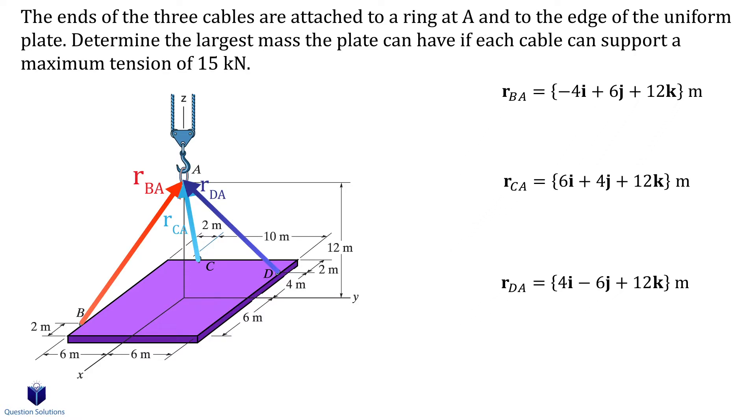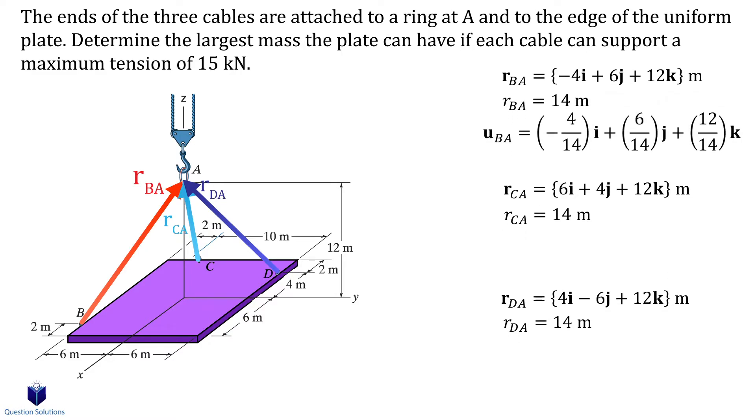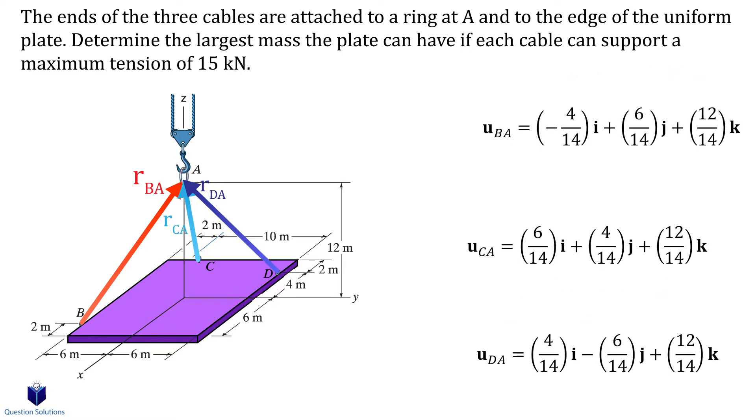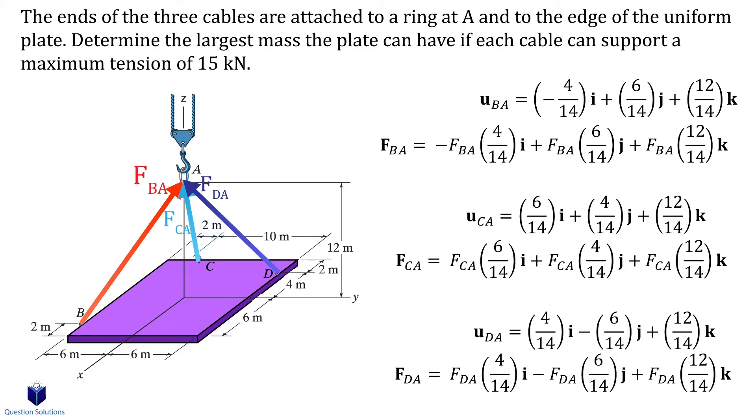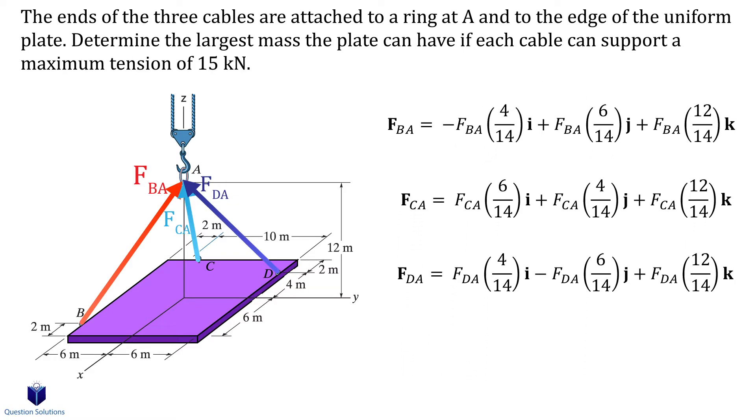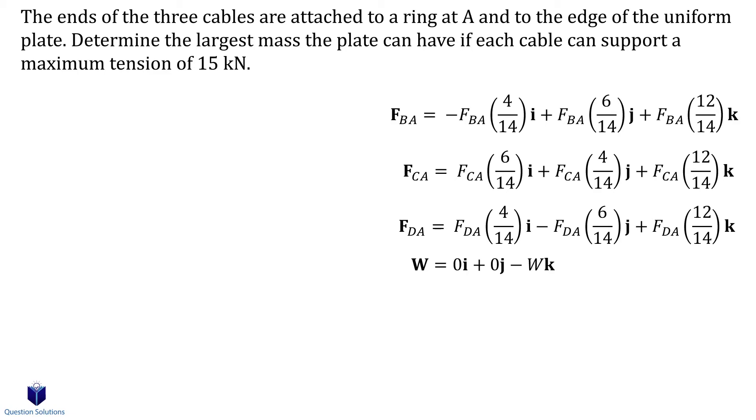Next is the unit vectors. Now to express each force all we need to do is multiply the magnitude of the force by the unit vector. Don't forget we also have the weight of the plate which will be straight down. Now we're going to equal each component to zero. First the x components, next y components.